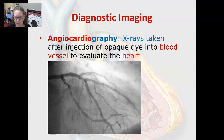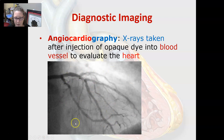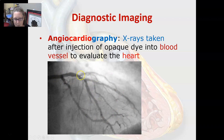Continuing with diagnostic imaging: angiocardiography involves x-rays taken after an injection of opaque dye into the blood vessel to evaluate the heart. Here's an example of an angiogram or angiocardiogram, where you can see the dye causes contrast to reveal the coronary arteries — the arteries that feed the heart.